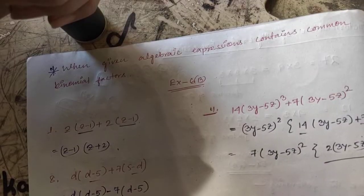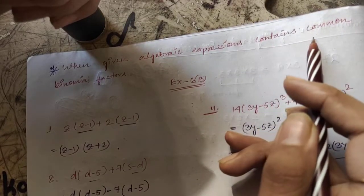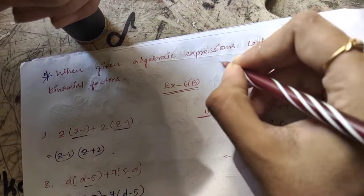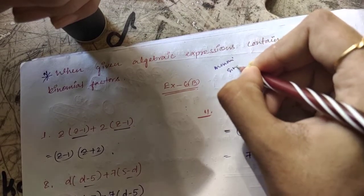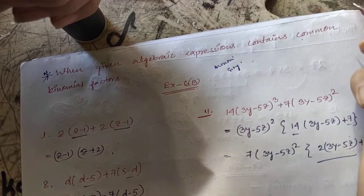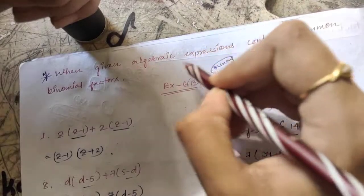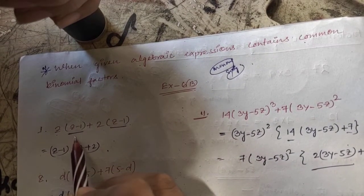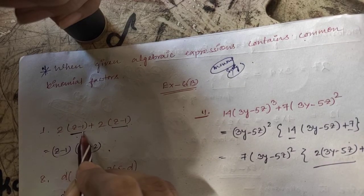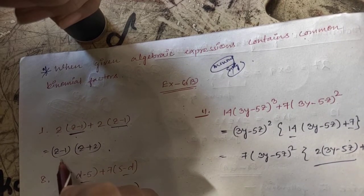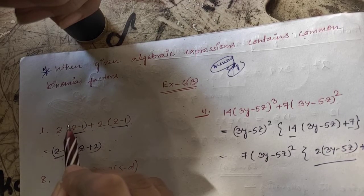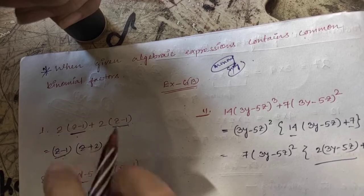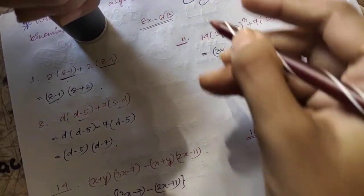Now for Exercise 6b: when the given algebraic expression contains common binomial factors. So far the common factors we found were monomials — single terms. But here, the algebraic expression has a two-term (binomial) common factor. Example: z(z − 1) + 2(z − 1). Here (z − 1) is common in both terms. Taking (z − 1) as common, we get (z − 1)(z + 2).